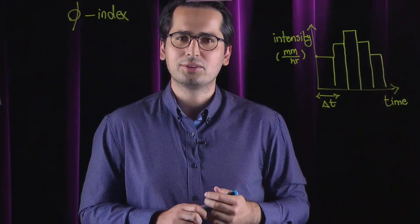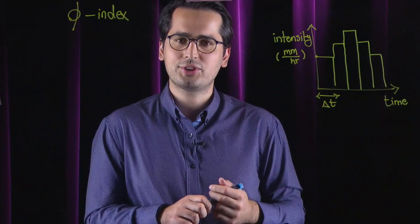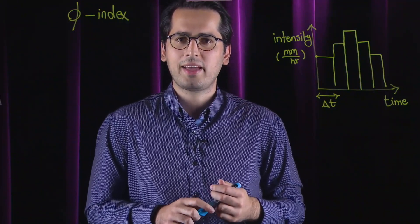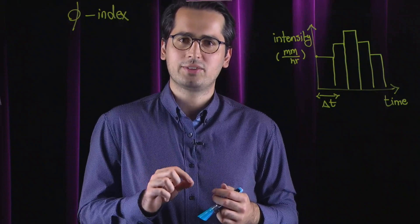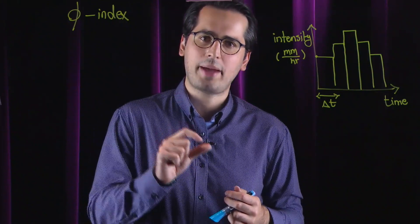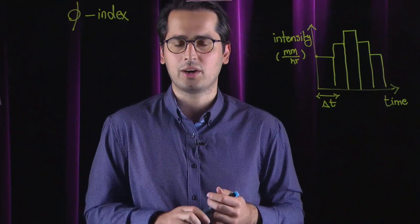The Phi index method tells you that there is a constant infiltration capacity, and whenever rainfall intensity is higher than that capacity, you will have surface runoff.